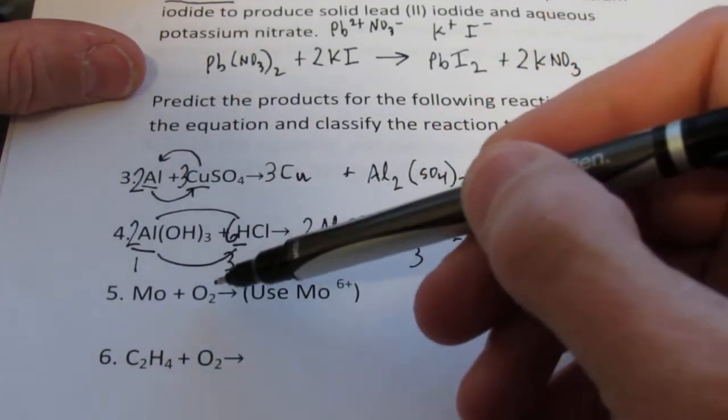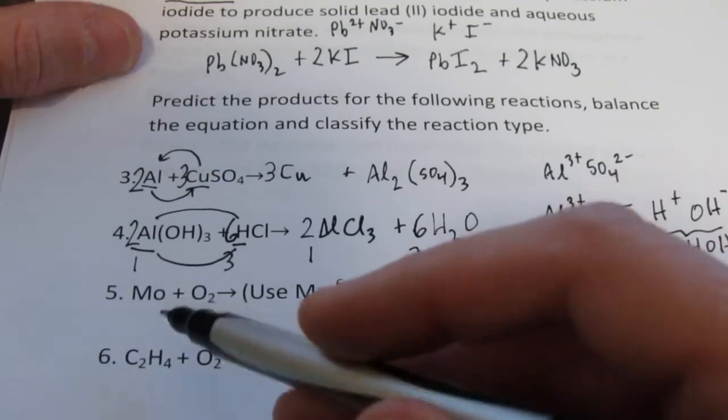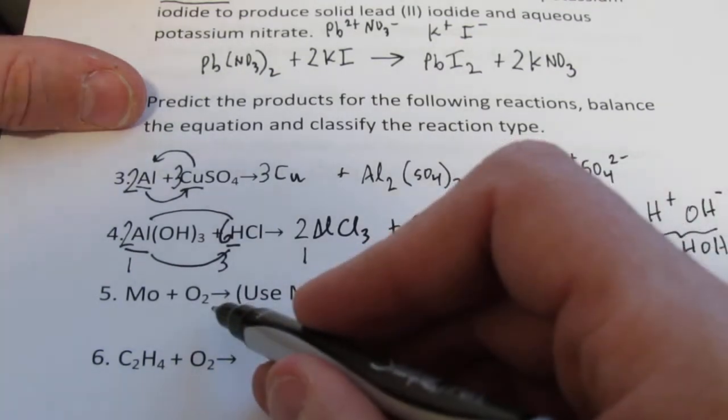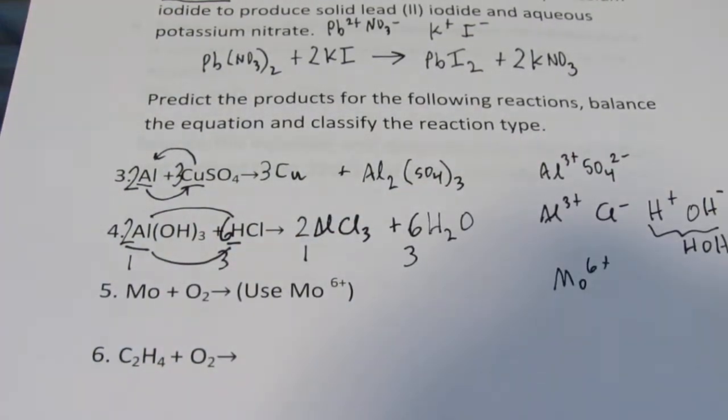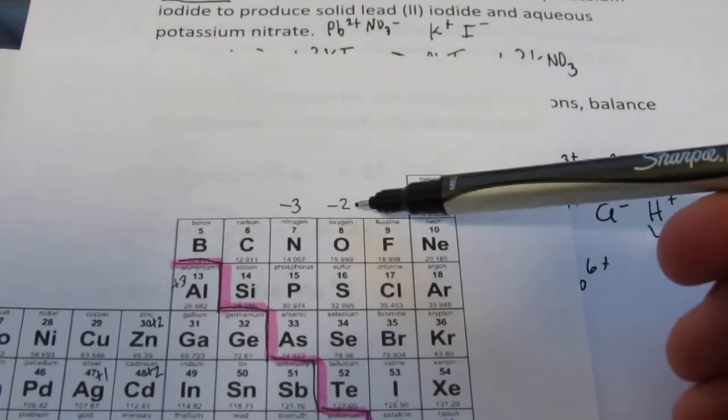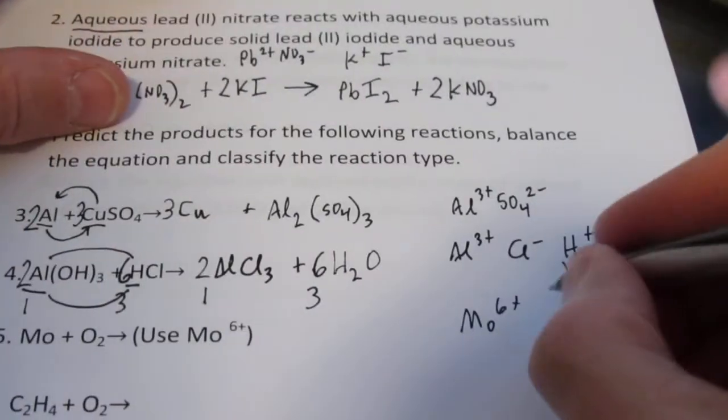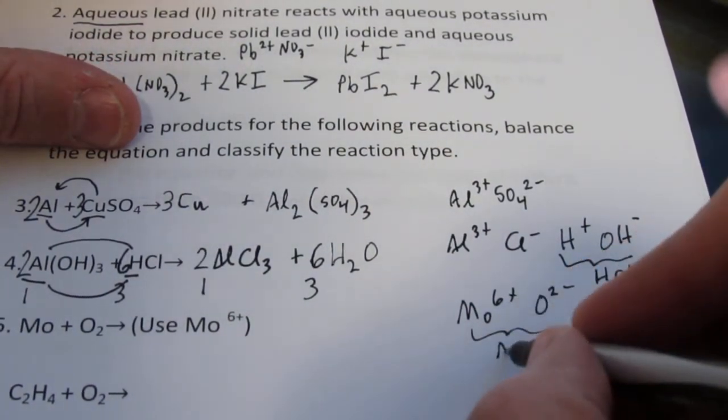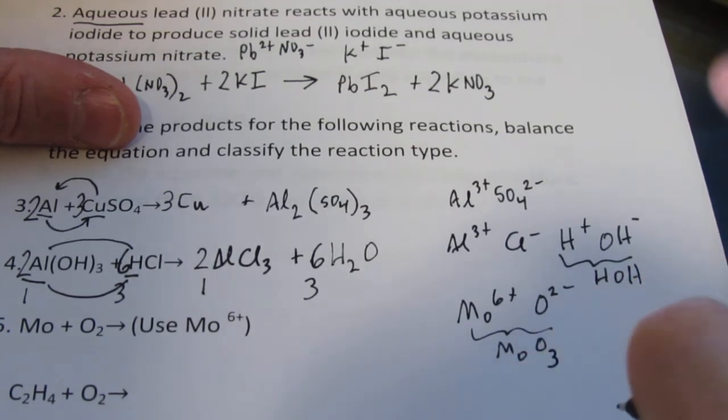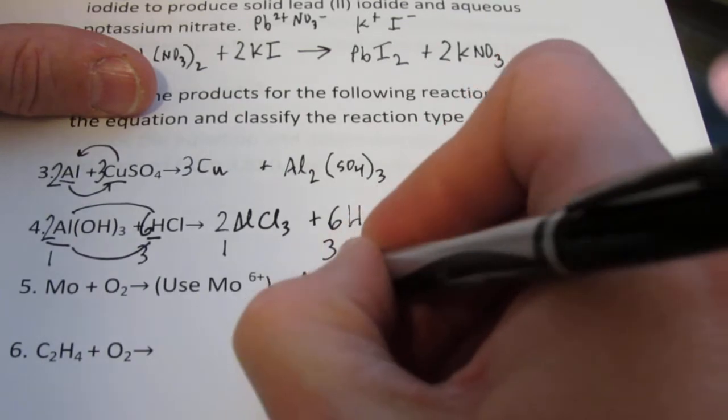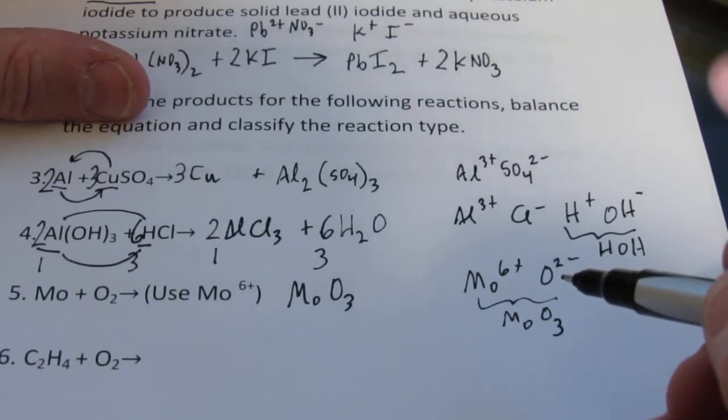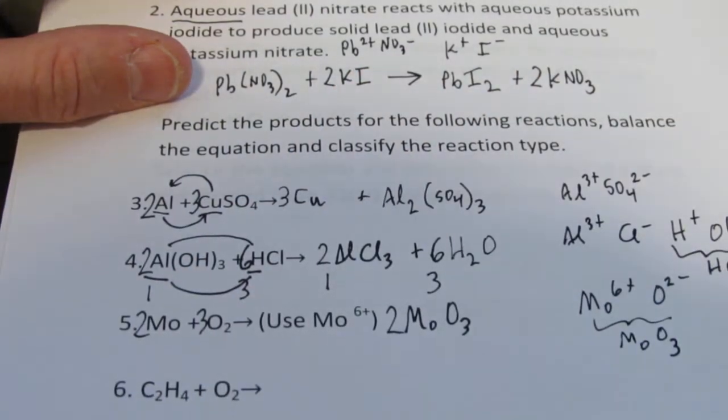Number 5: molybdenum and oxygen, a synthesis reaction. I tell you to use molybdenum 6+, and oxygen is in group 16, so it's 2-. That gives us MoO3 - molybdenum(VI) oxide. Balancing: 2Mo + 3O2 → 2MoO3.